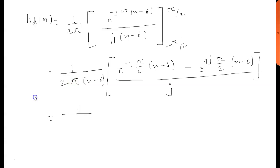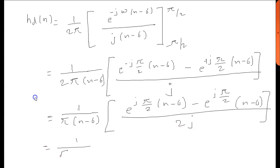This can be rewritten as 1/(π(n-6)) times [e^(jπ(n-6)/2) - e^(-jπ(n-6)/2)]/(2j), which simplifies to sin(π(n-6)/2)/(π(n-6)).